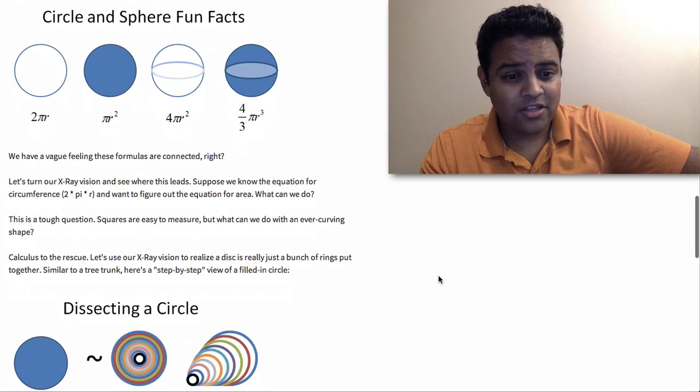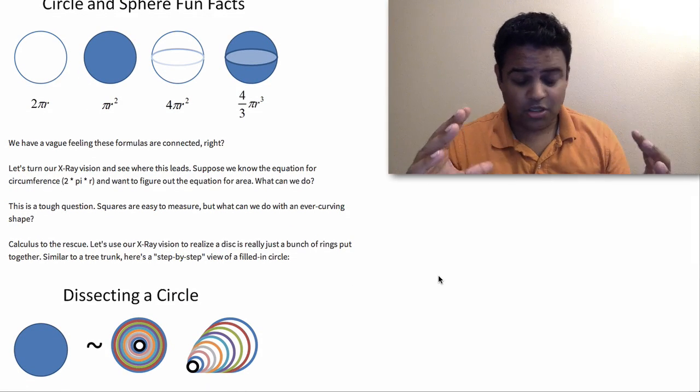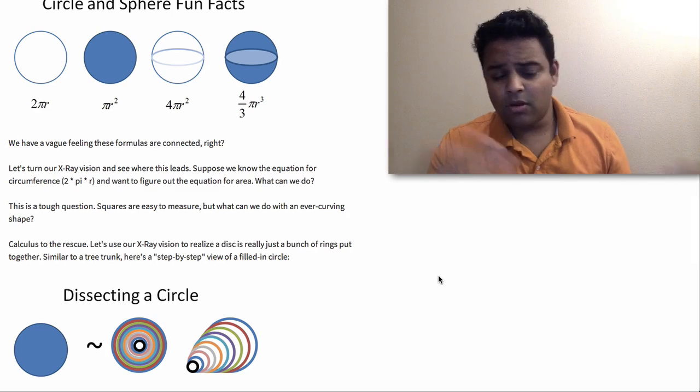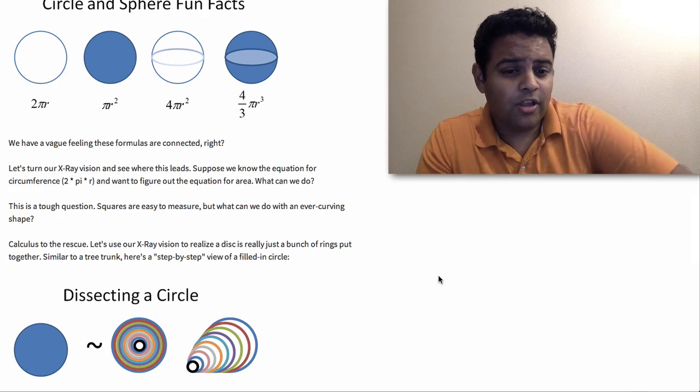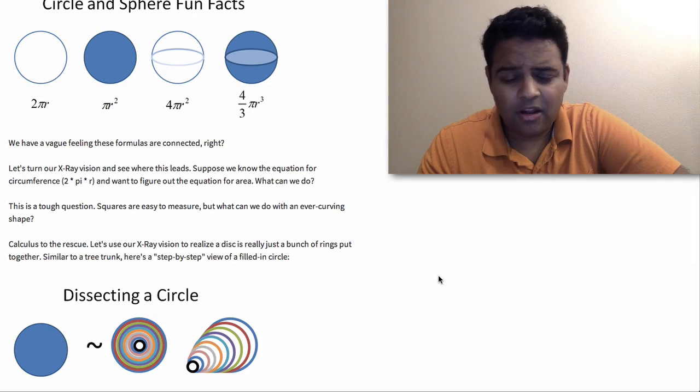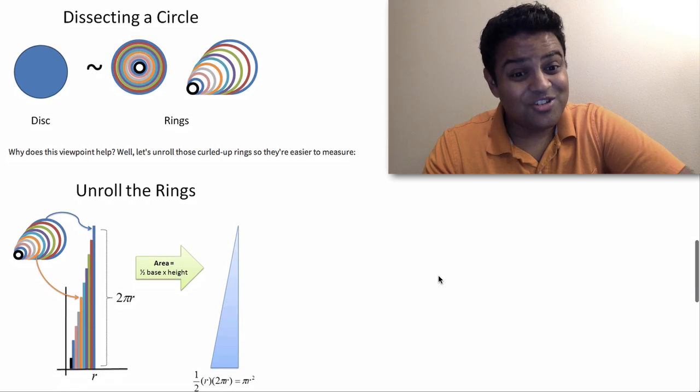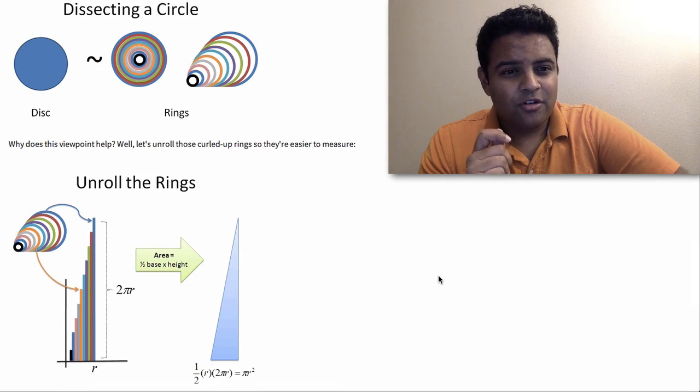One insight from calculus is actually that we can dissect a circle into rings. This is just like the tree trunk, right? We saw that a tree is made out of a bunch of rings. Well, why not a circle? We could think of a circle as just being made out of a bunch of rings. Okay. I mean, yeah, it's a nice little what-if scenario, but how does that help us? Well, here's the trick.